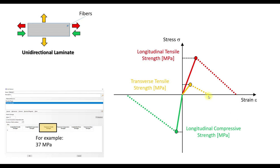Next, we have transverse tensile strength, as can be seen here. In this case, it is much lower than the longitudinal tensile strength in most cases. For example, we have here 37 megapascals.